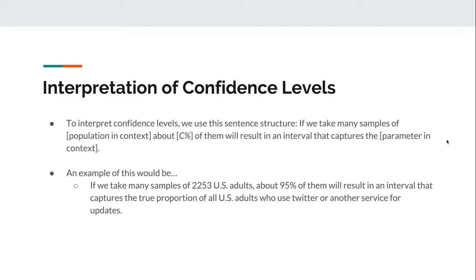To interpret confidence levels, we use this sentence structure: if we take many samples of blank, about blank percent of them will result in an interval that captures the blank. An example of this would be: if we take many samples of 2,253 U.S. adults, about 95% of them will result in an interval that captures the true proportion of all U.S. adults who use Twitter or another service for updates.